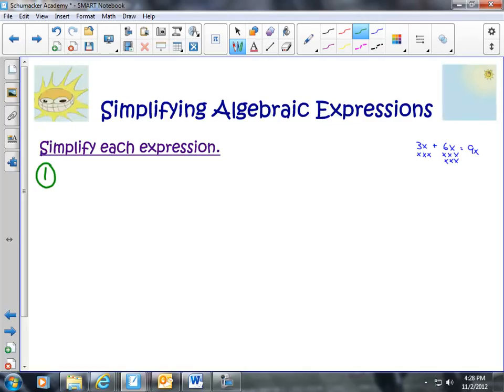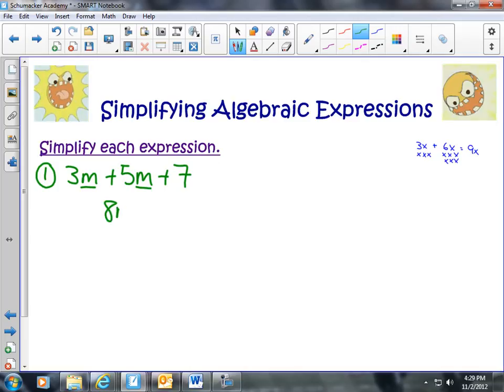Let's say we have 3m plus 5m plus 7. Well, in this case, we only have one number that is a numeric term, and the rest are algebraic terms, and they both have an m, so it means I can add these together. 3 plus 5 is 8. 8 what? 8ms.